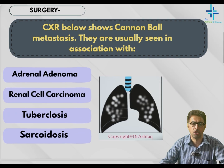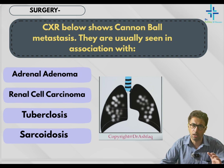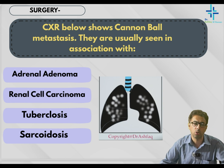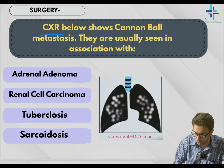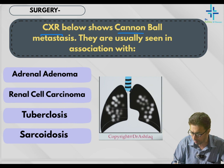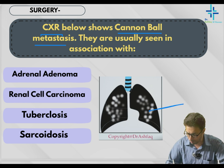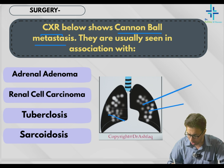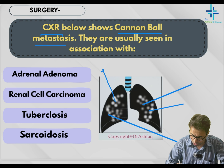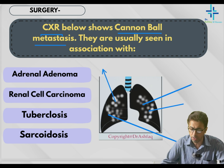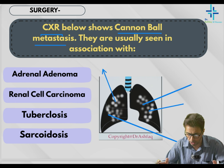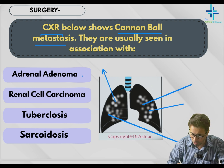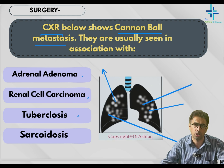Now this question is from surgery. We are moving from one subject to the other because questions come in a random manner, acclimatizing you to the environment of NEET PG or FMG. A CXR — chest radiograph — shows cannonball metastasis. These are metastatic lesions visible in both lungs — the right lung and the left lung show cannonball shadows. The options are adrenal adenoma, renal cell carcinoma, tuberculosis, and sarcoidosis.